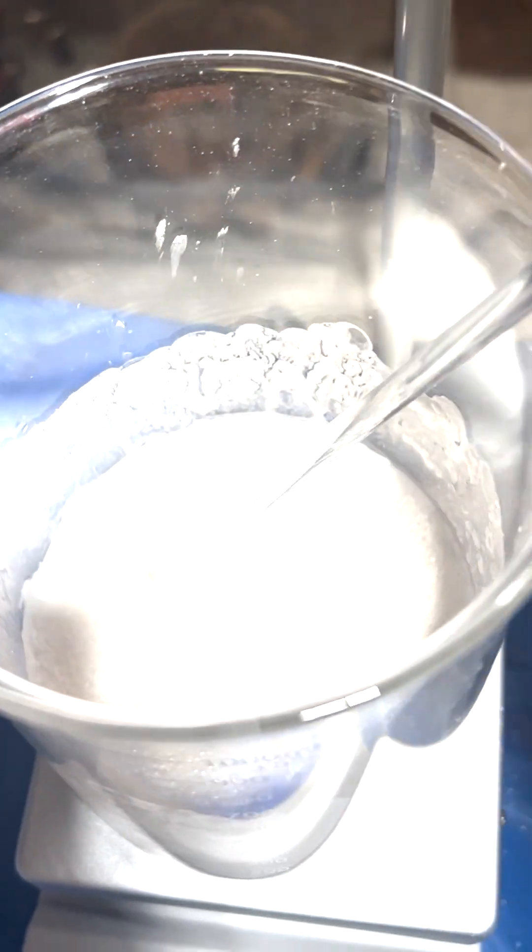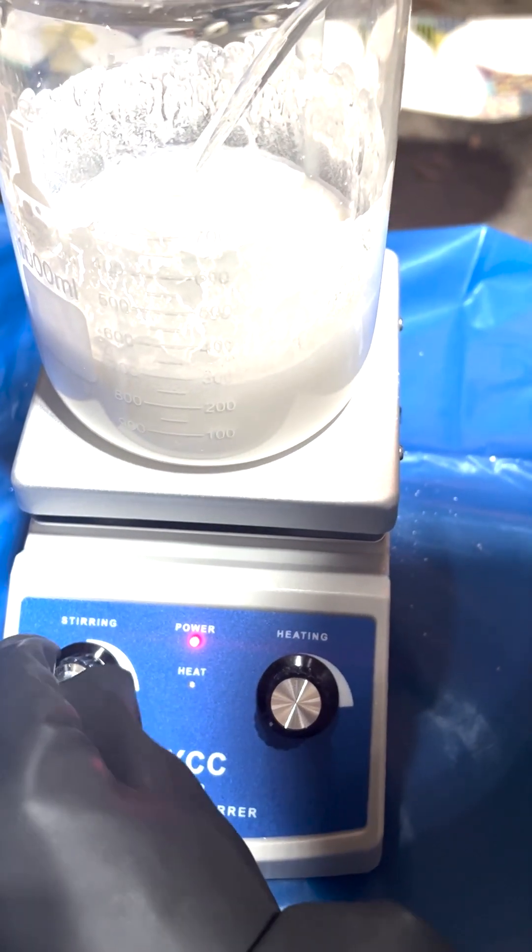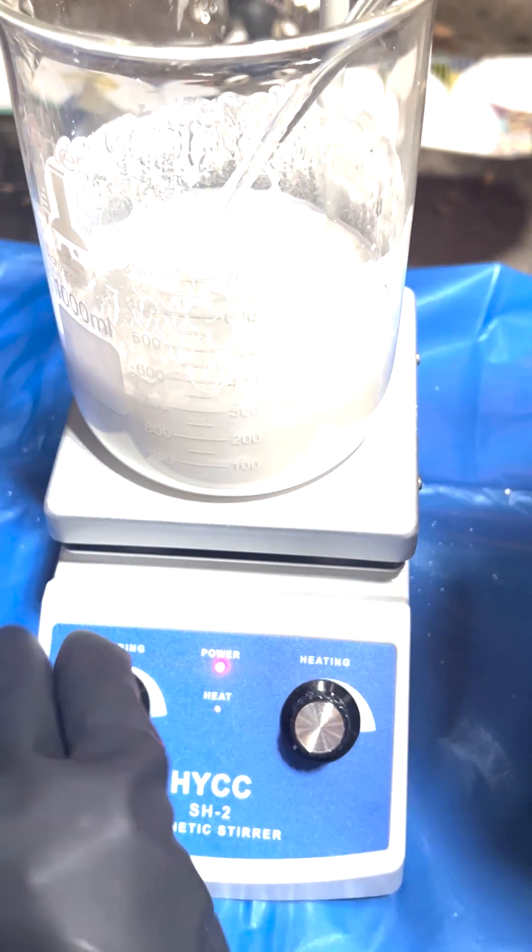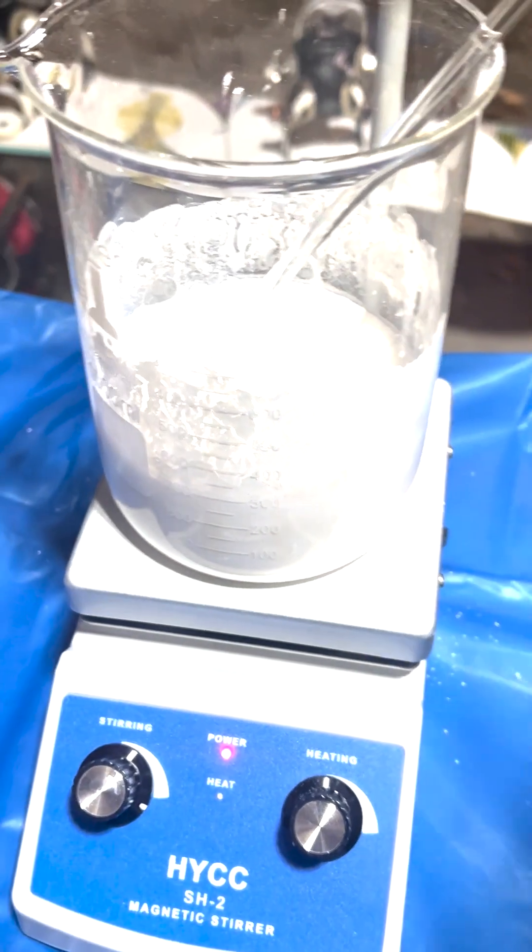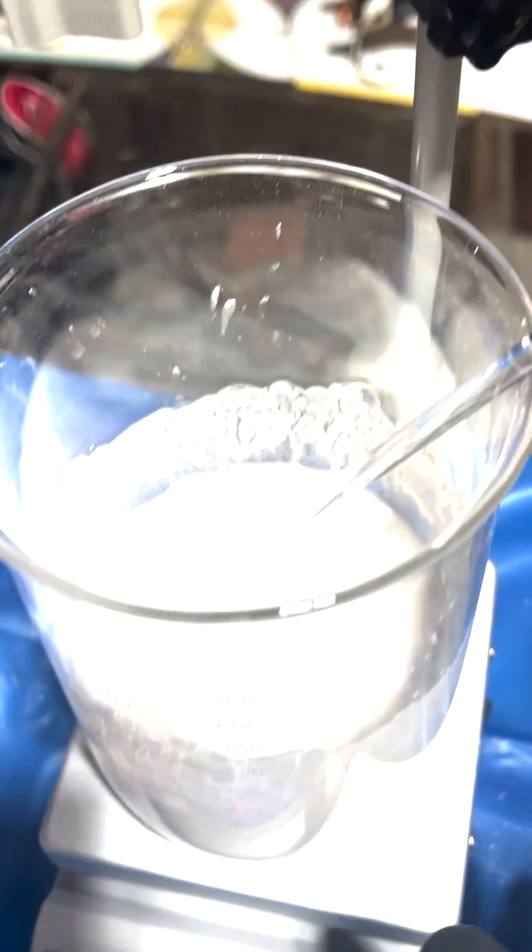Actually, I'm going to turn on the stir rod here just to make this go faster. So when they mix, it produces calcium acetate, which is what we want to mix later on, and a byproduct of CO2 gas, and that's what these bubbles are on the top.